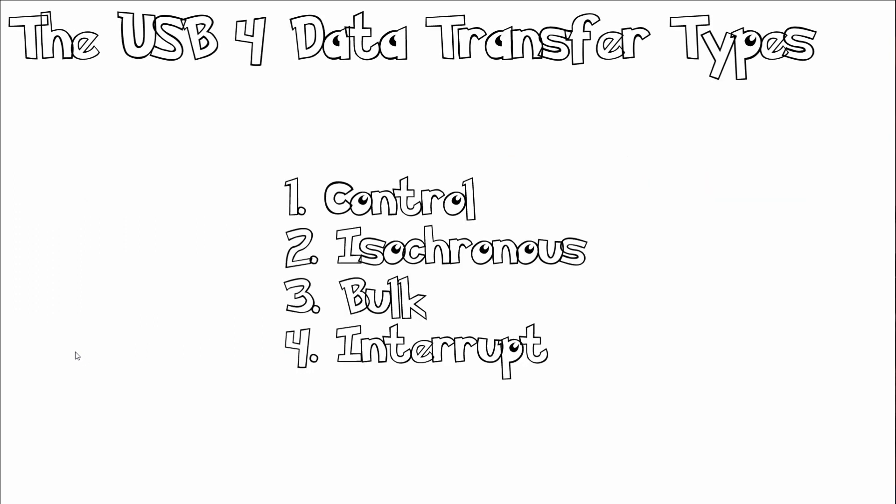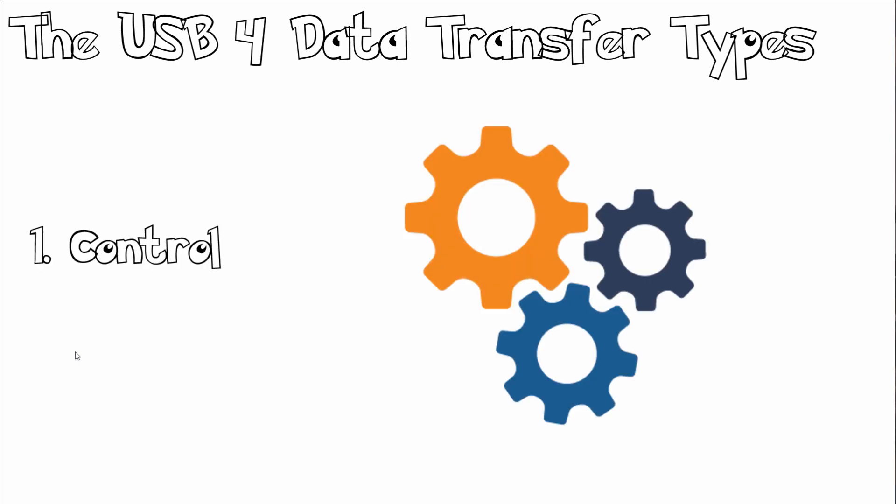Now let's look at the four main USB data transfer types: control, isochronous, bulk, and interrupt. Control transfers exchange configuration, setup, and command information between the device and the host. The host can also send commands or query parameters with control packets.